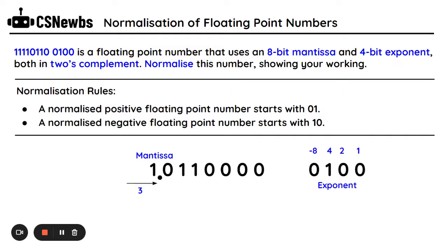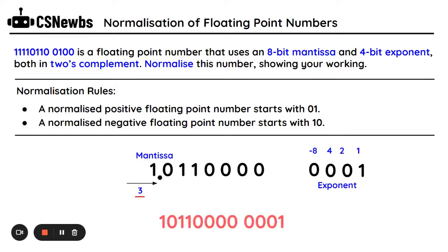My mantissa is now ready, but my exponent is not. I've had to move the decimal point of the mantissa by three spaces, so I need to remove three from my exponent. The current value of my exponent is four, and I take away three from that to give me one. So my exponent is one. I'm going to neatly write this out — and that is the answer to this question. This is how you normalize a positive and a negative.